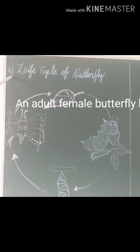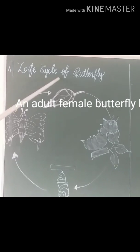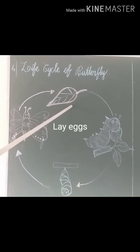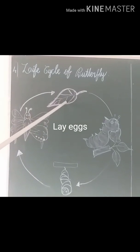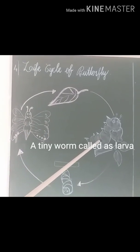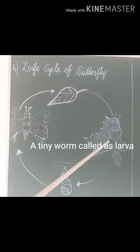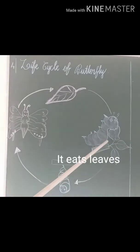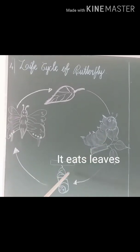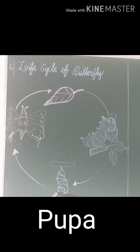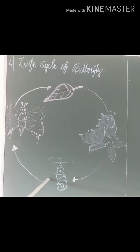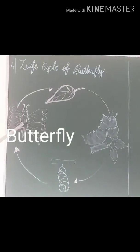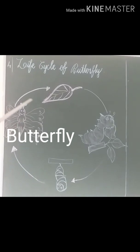Fourth question: life cycle of a butterfly. First, an adult female butterfly lays eggs. Second, a tiny worm called a larva hatches and eats and lives. Third, the larva turns into a pupa. Last stage: the adult butterfly breaks out.